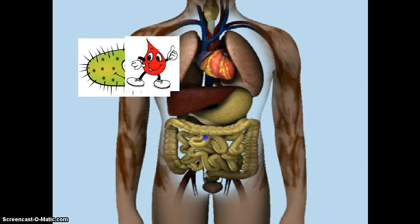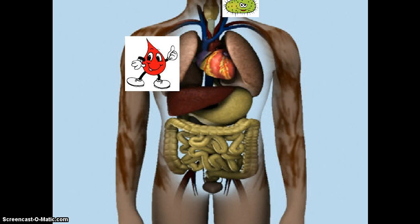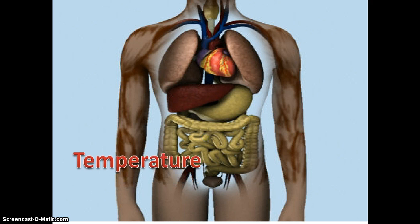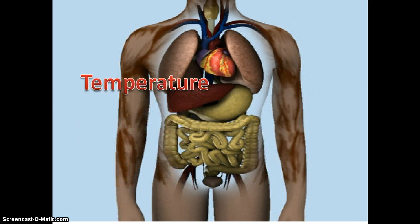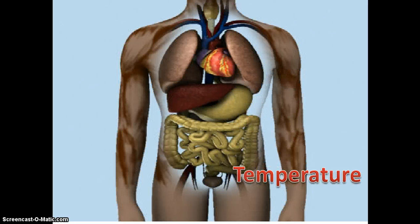Blood also regulates the body temperature. This is because the blood capillaries in our skin help to keep our body temperature constant at 37 degrees centigrade.